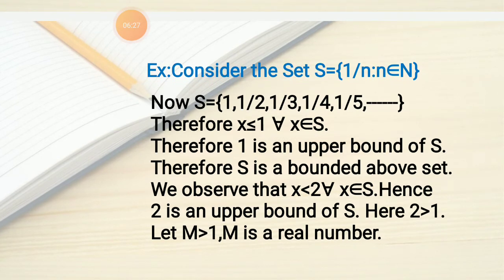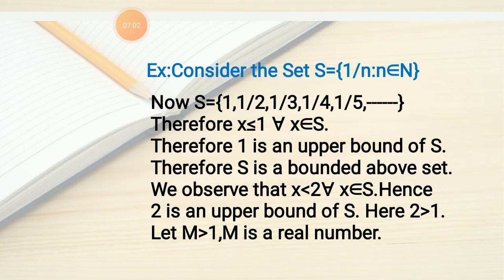Consider the set S = {1/n : n ∈ N}. This is an infinite set: when n=1 the element is 1, when n=2 it is 1/2, then 1/3, 1/4, 1/5, and so on. This is a decreasing set, and the biggest element is 1. So every element of S is less than or equal to 1, i.e., X ≤ 1 for all X ∈ S. By definition, 1 is an upper bound of S, and therefore S is a bounded above set.